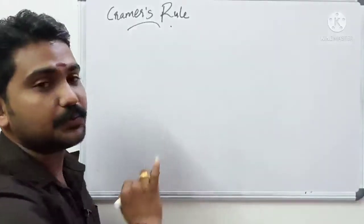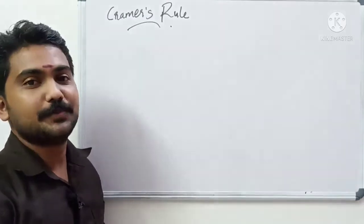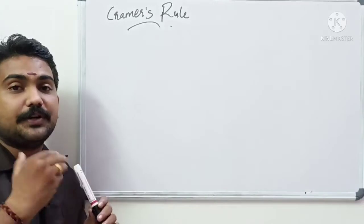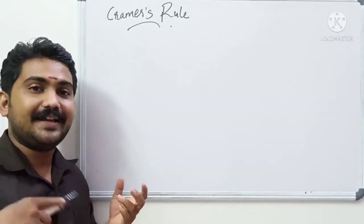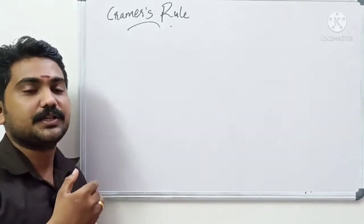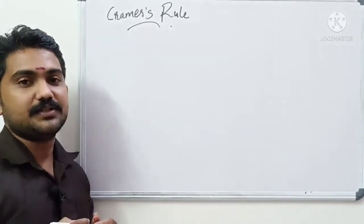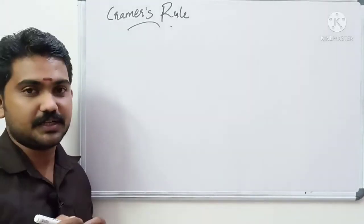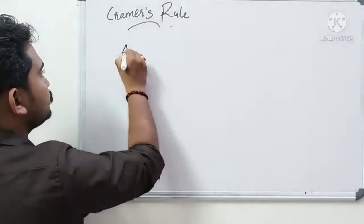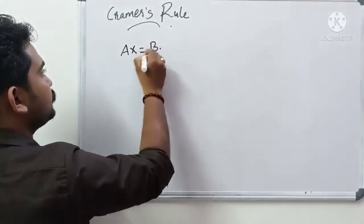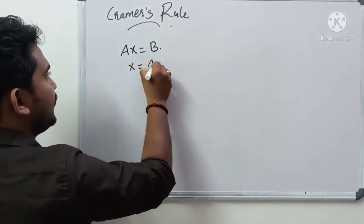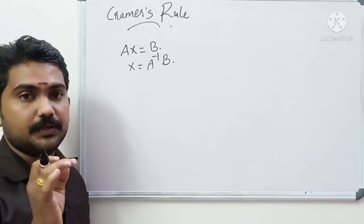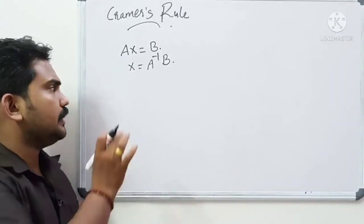We are going to learn the grammar of this matrix. I will tell you how to measure matrix equations — linear equations. We have Ax is equal to b, where x is equal to A inverse b. We learn this equation.